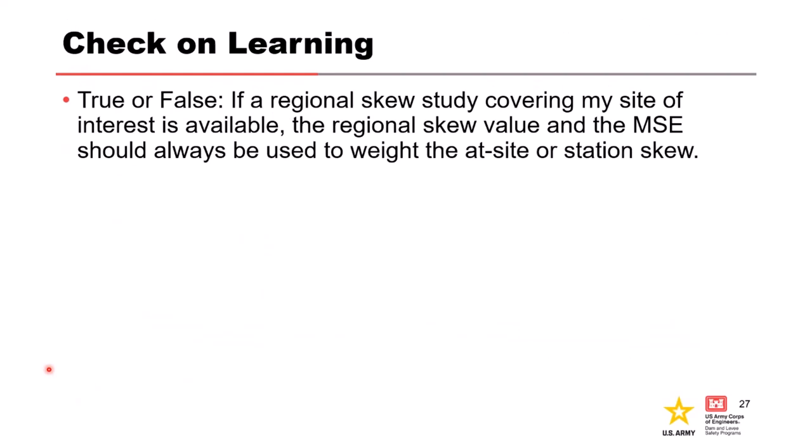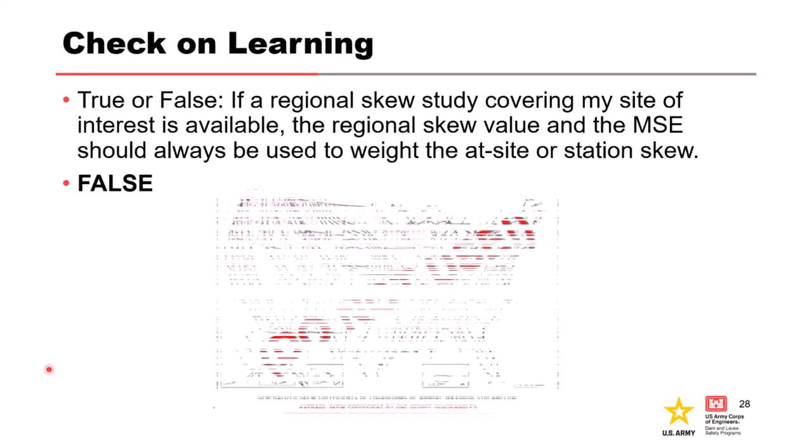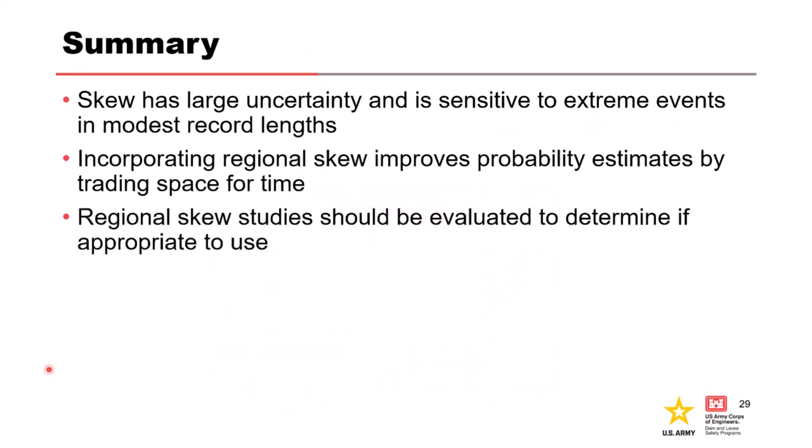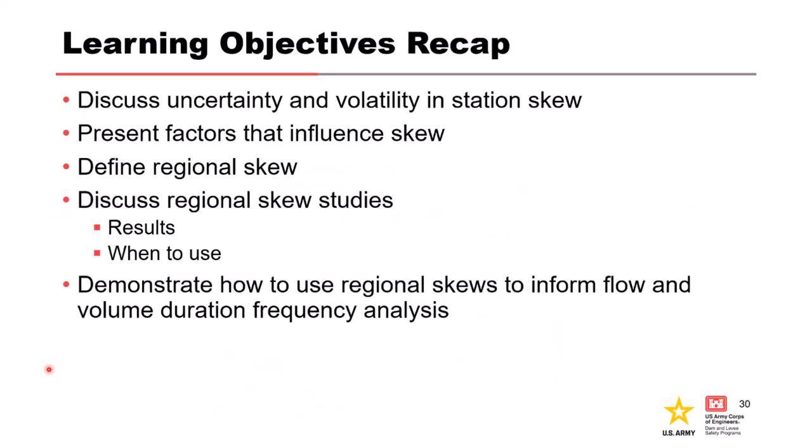True or false: if a regional skew study covering my site of interest is available, the regional skew value and MSE should always be used to weight that station skew? The answer is false — it shouldn't always be used. As shown, there is a study that gives a regional skew value for all 48 states, but we know we're not going to use that one. In summary: skew has large uncertainty and is sensitive to extreme events and short record lengths; incorporating regional skew improves probability estimates by trading space for time; and regional skew studies should be evaluated to determine if they're appropriate for your study. We discussed uncertainty and volatility, factors that influence skew, defined regional skew, discussed studies and results, and demonstrated how regional skew informs flow and volume duration frequency analysis.